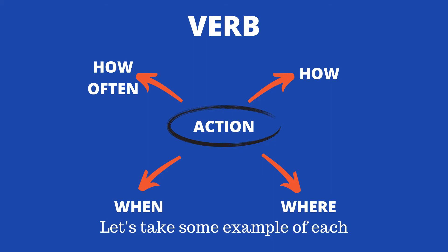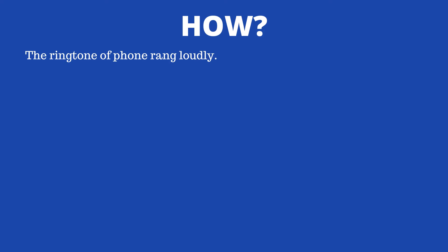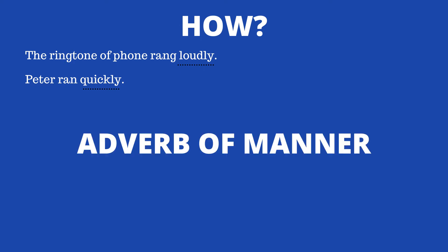Let's see some examples. First, 'how': 'The ringtone of the phone rang loudly.' How did it ring? It rang loudly. Another example: 'Peter ran quickly.' How did Peter run? He ran very quickly. Since these adverbs describe the manner in which an action is performed, they are called adverbs of manner.